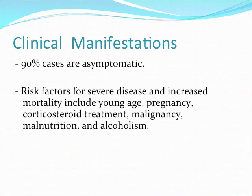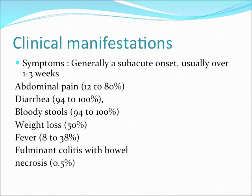Regarding clinical manifestations, 90% of cases are asymptomatic. People who have severe disease are usually in one of these groups: young age, pregnancy, corticosteroid treatment, malignancy, malnutrition, and alcoholism. The onset is usually subacute. The most frequent symptoms are diarrhea and bloody stools. You can also have abdominal pain, weight loss, and fever — only in 8 to 38% of cases. It can be as bad as causing fulminant colitis with bowel necrosis.